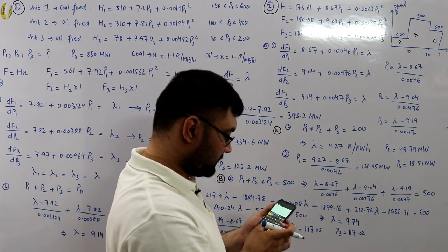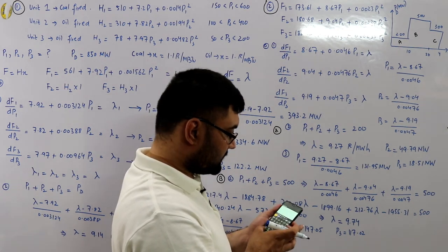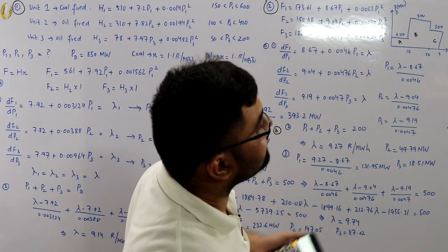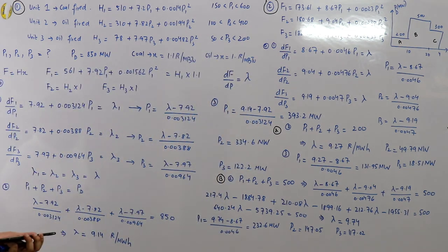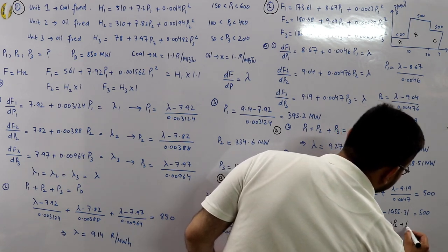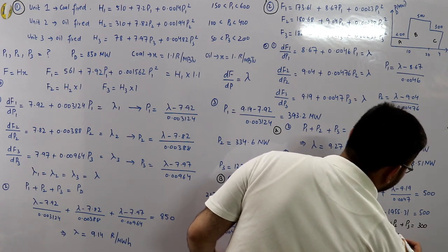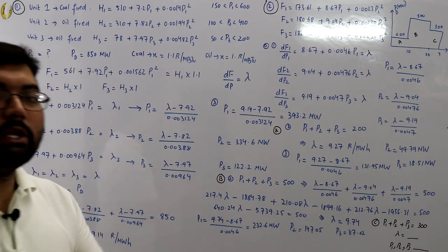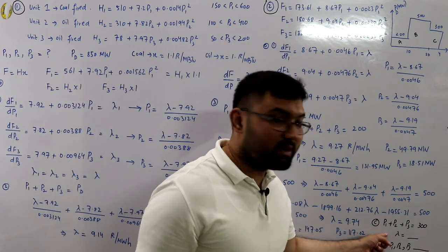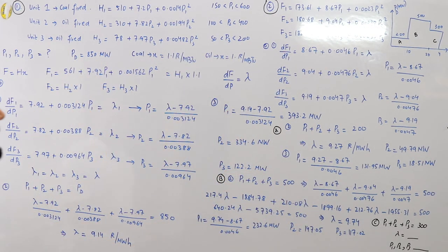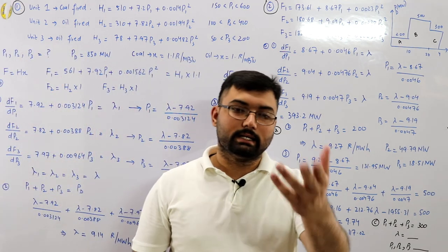Similarly, checking interval A sum: 131.95 + 49.79 + 18.51 = 200.25 ≈ 200 MW. For interval C, as homework, set p1 + p2 + p3 = 300 and find lambda, then p1, p2, p3. Share your answers in the comment section. See you in the next video — take care, goodbye.